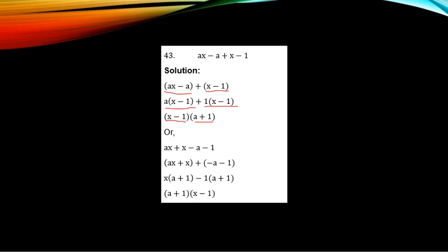Alternatively, bring AS and S together: AS plus S, then minus A minus 1. Group as (AS plus S) + (minus A minus 1). From the first group, factor out S to get (A plus 1). From the second group, factor out minus 1; dividing minus A by minus 1 gives plus A, and dividing minus 1 by minus 1 gives plus 1, so you also get (A plus 1). Since (A plus 1) is common, factoring it out gives S from the first group and minus 1 from the second, yielding (A plus 1)(S minus 1). This is how we factorize by grouping.